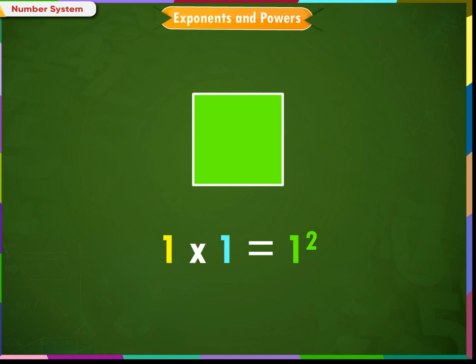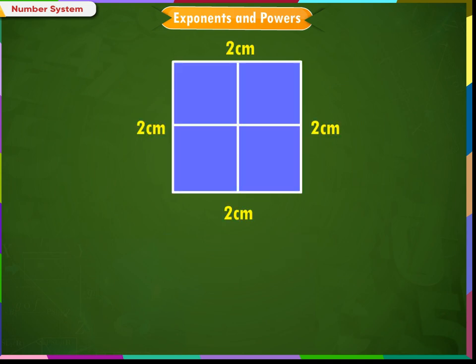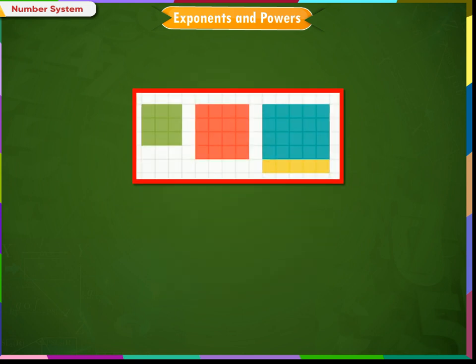Look at the square tiles shown on the screen. Let us assume that each side is 1 cm. There is one such row with 1 square unit cm. Now let us consider the figures shown on the screen. There are 2 squares in each row and 2 such rows, which means in all there are 4 square units.